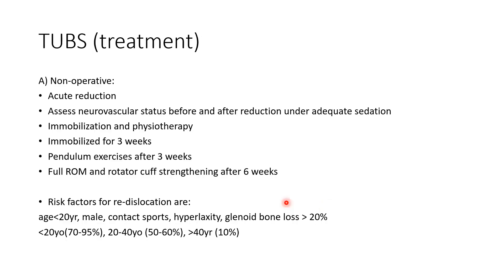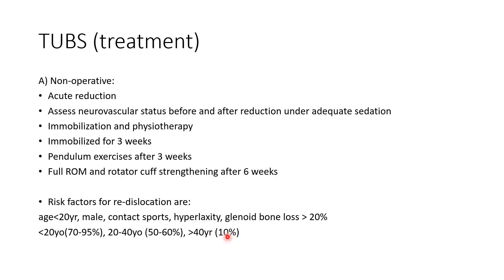For non-operative treatment: any dislocation requires acute reduction. Assess neurovascular status before and after reduction under adequate sedation, then immobilize and physiotherapy. Immobilize for three weeks, exercise for three weeks, and then full activity after six weeks. Risk factors for re-dislocation include age younger than 20 years, male sex, contact sports, hyperlaxity, and glenoid bone loss of more than 20%. Almost 100% recurrence in those under 30 years old, about 50% for ages 20-40, and only 10% in those over 40.